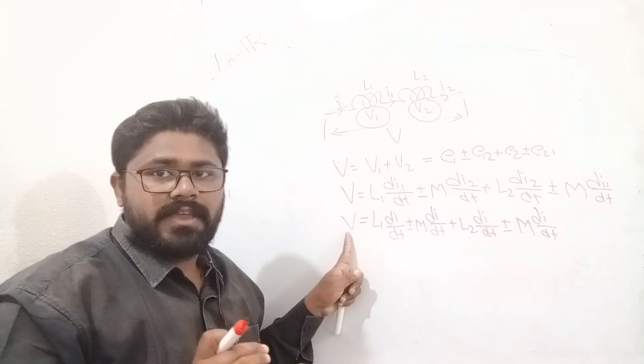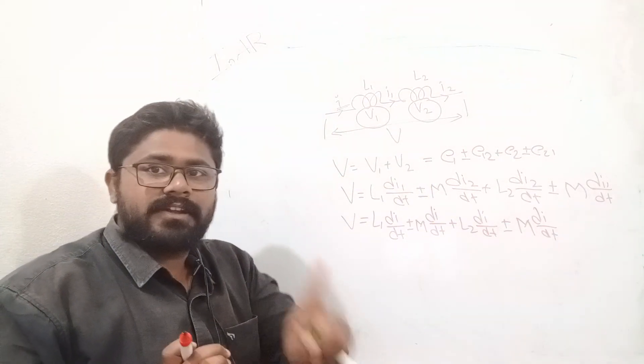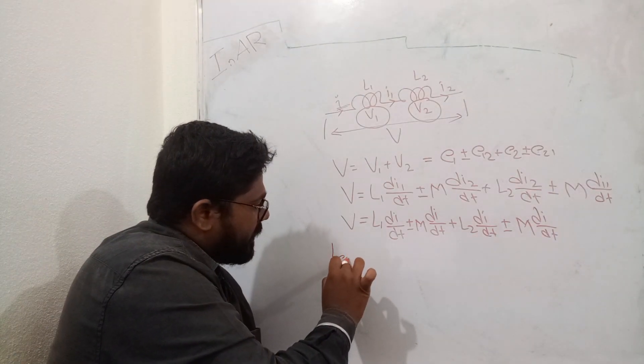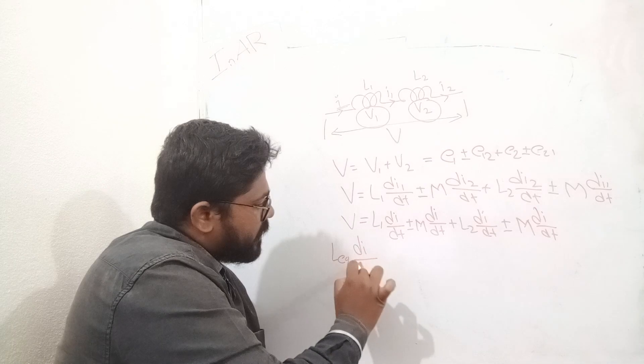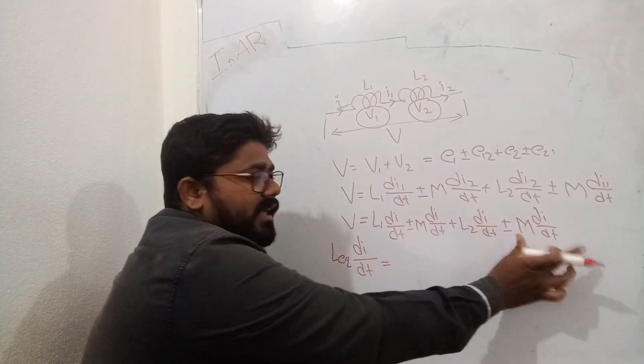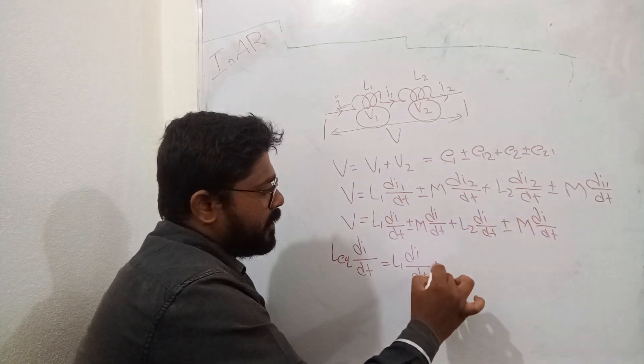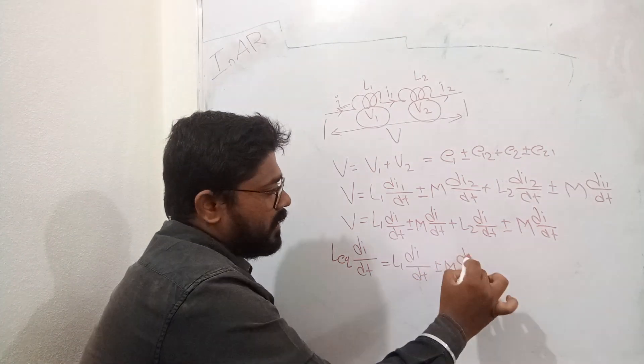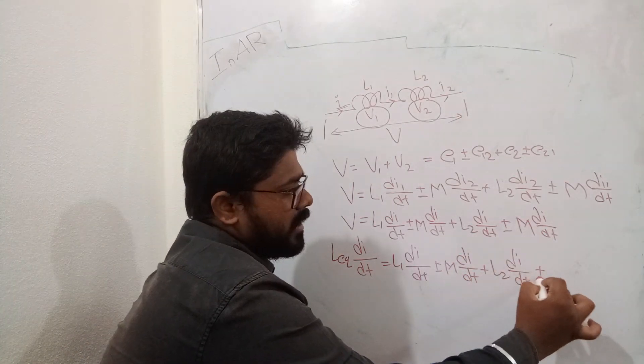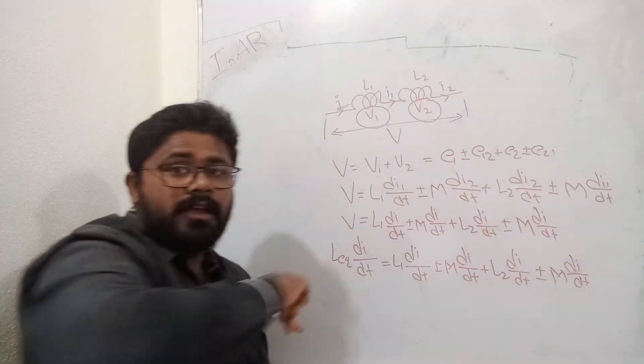Again, the total voltage V is nothing but according to Faraday's laws of electromagnetic induction L di by dt. L equivalent di by dt should be equal to this value. That is L1 di by dt plus or minus M di by dt plus L2 di by dt plus or minus M di by dt.